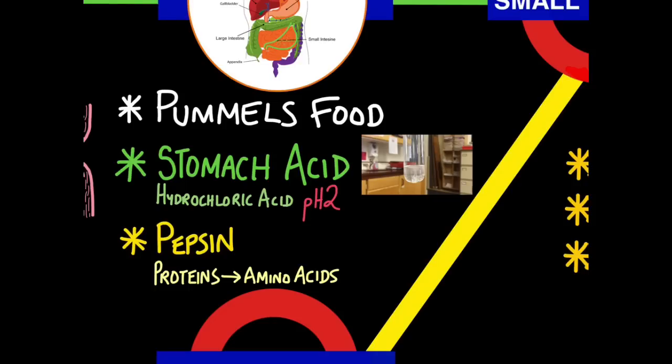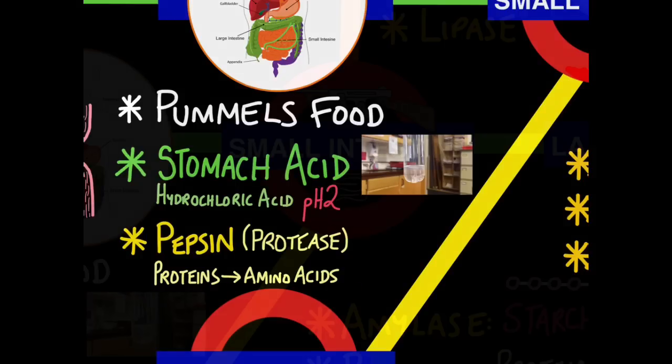Now here's the second enzyme you need to know, pepsin. Now pepsin is an example of a protease, whereas amylase was an example of a carbohydrase. Pepsin breaks down proteins into amino acids. These are soluble molecules. This is insoluble.